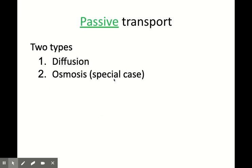At the end of the last lesson we learned that there are two categories of transport across the cell membrane: passive and active transport. Remember passive does not need energy to happen. We're going to focus on passive transport and break it down further. There are two types of passive transport you need to know about in National 5 — diffusion and osmosis. Osmosis is a special case of diffusion that we'll come back to in the next part. We're going to start with diffusion today.